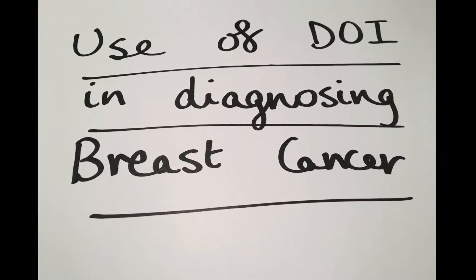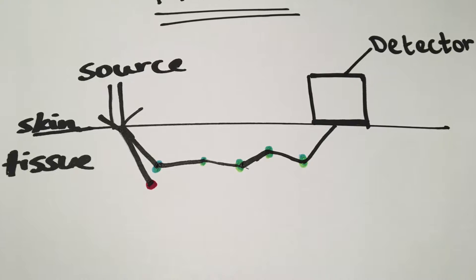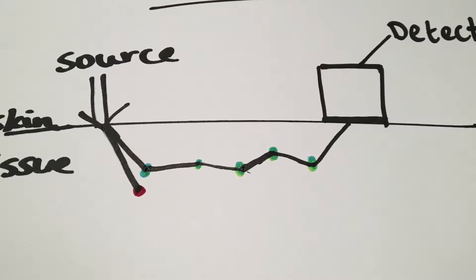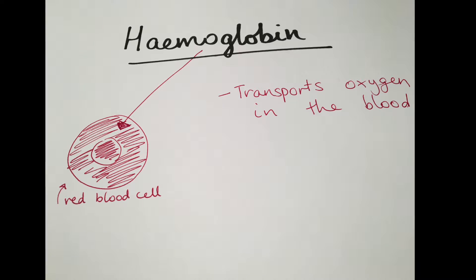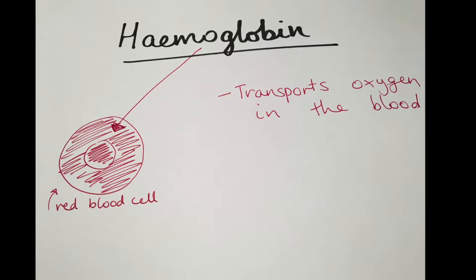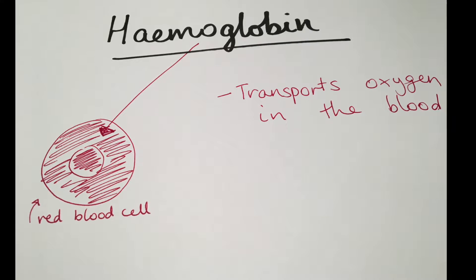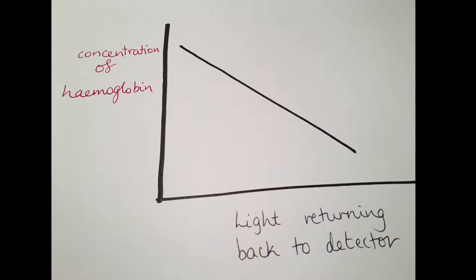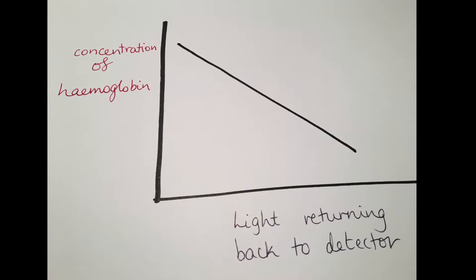Use of DOI in diagnosing breast cancer. As stated earlier, the infrared light gets absorbed or reflected by the tissue, and the main absorber in tissue of infrared light is a substance called haemoglobin. Haemoglobin is a protein in red blood cells that transports oxygen in the blood. The fact that infrared light gets absorbed by haemoglobin is particularly useful in diagnosing breast cancer, since there is a higher haemoglobin concentration in tissue with cancer than in normal tissue.